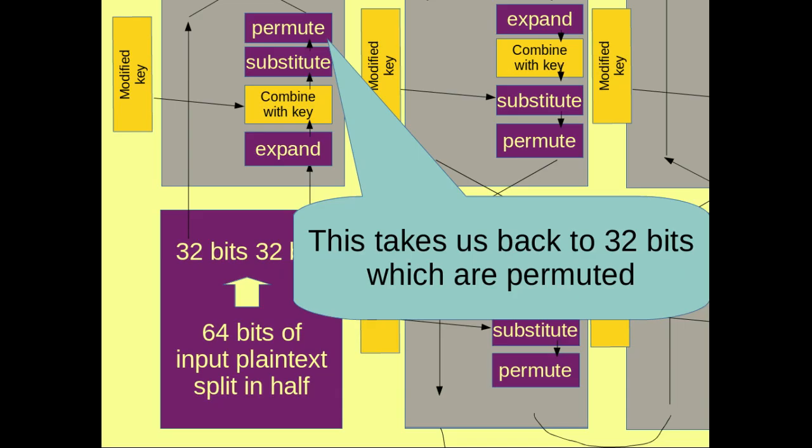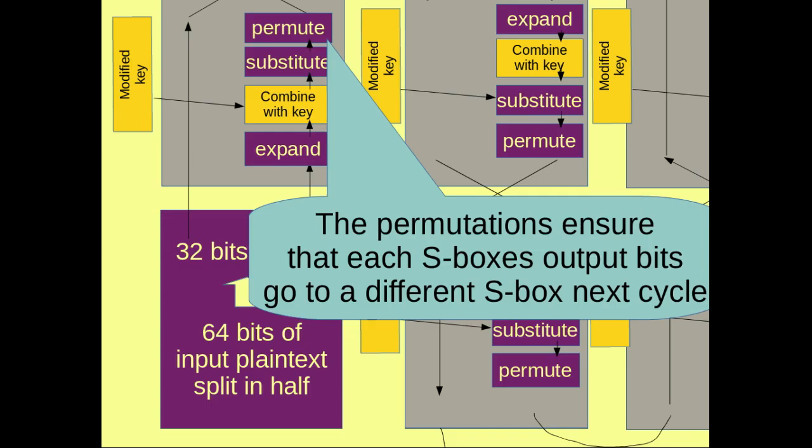The permutation routine takes these 32 bits and shuffles them about a bit. And one of the reasons it does this is to ensure that each of the S-boxes outputs, the S-box from the substitution routine beforehand, each of their output bits go to a different S-box next cycle. So it's all properly shuffled up and jumbled up.